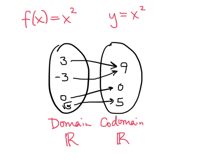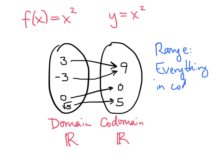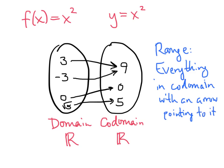So what's the range of this function? The range of a function is everything in the co-domain that has an arrow pointing to it. The range is contained within the co-domain. Another way to think about this is that it's the set of all possible outputs of our function — all of the things that we can actually get out of our function.